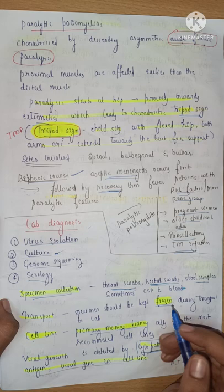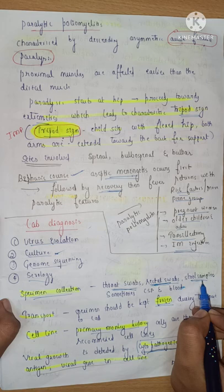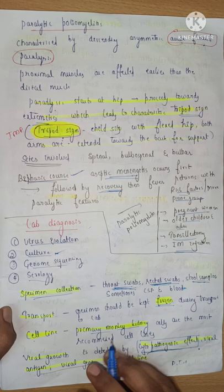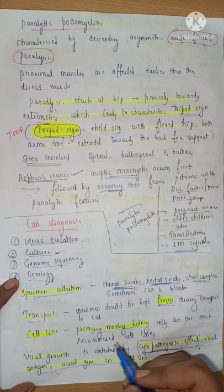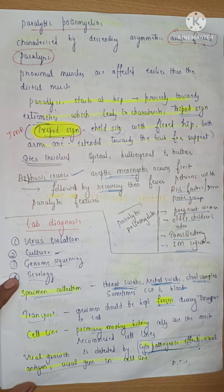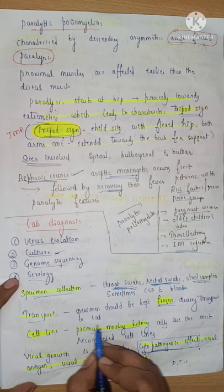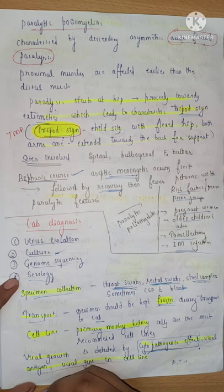Since poliovirus is transmitted through the fecal route, the rectal swab is the most preferred specimen, and stool samples and throat swabs are also used. For transport, once you collect the specimen — whether a throat swab or rectal swab — it should be frozen during transport to the lab.